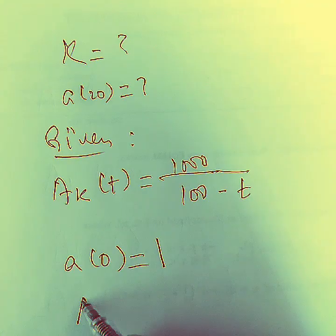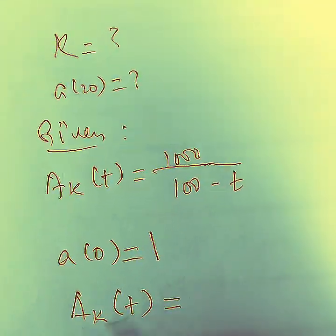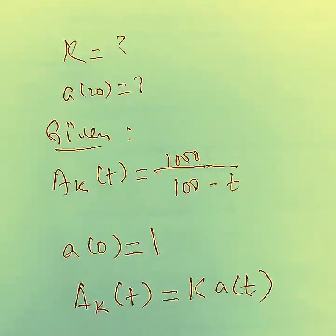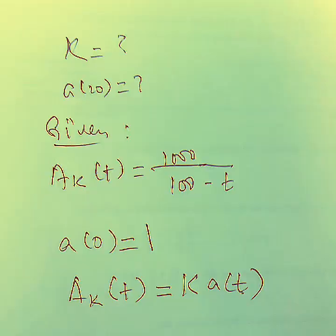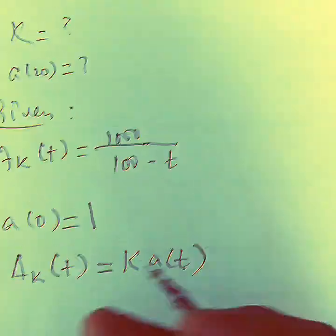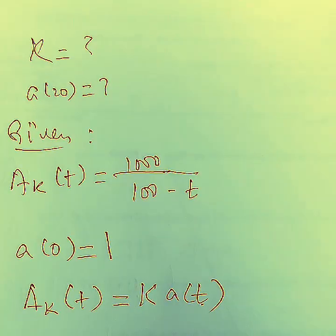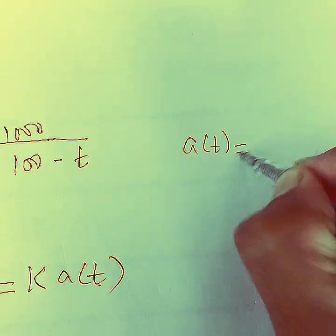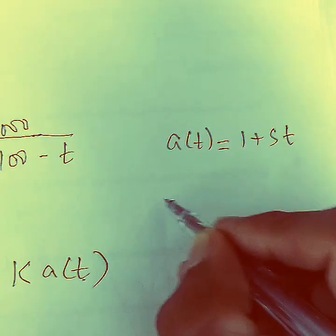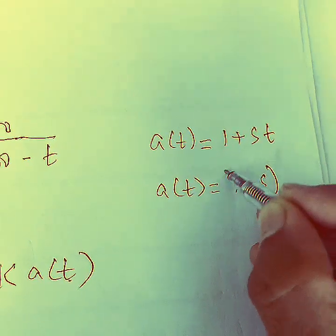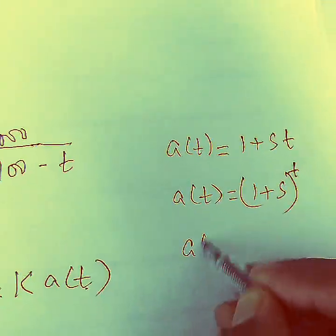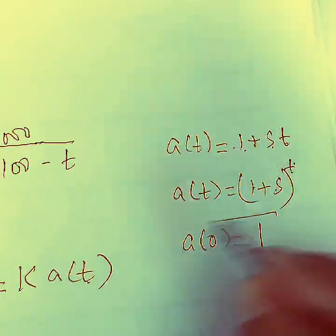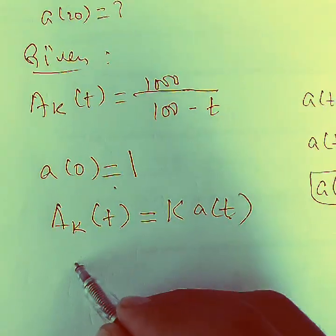We know that a(0) always equals 1. We have the formula relating the amount function and the accumulation function. If you plug in time 0, you know the amount value at the initial time is always the principal amount. For simple interest, a(t) = 1 + st, and for compound interest, a(t) = (1+s)^t. Plugging in t=0 gives 1 in both cases. So we use the property that a(0) = 1.